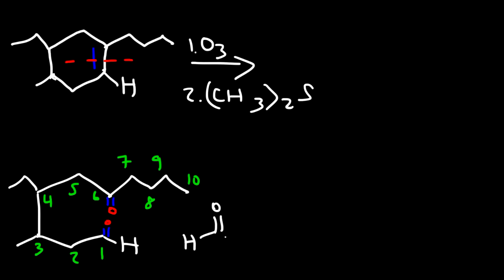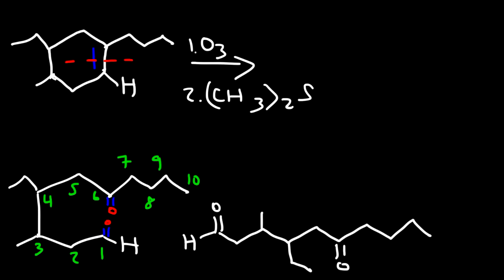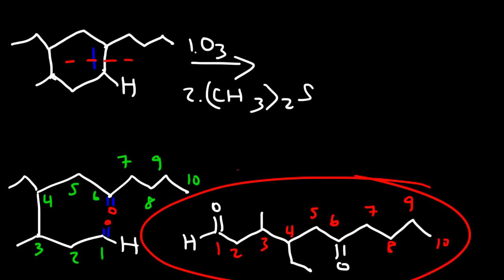Let's redraw. This is carbon 1, 2, 3, 4, 5, 6, 7, 8, 9, 10. Attached to carbon 3, there's a methyl group. There's an ethyl on carbon 4. On carbon 6 we have a carbonyl group. Just to double-check: 1, 2, 3, 4, 5, 6, and so forth. This is the product of the reaction.